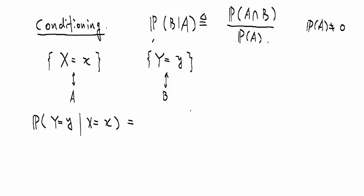This, by definition, is the probability that X equals x and Y equals y, divided by probability of X equals x.